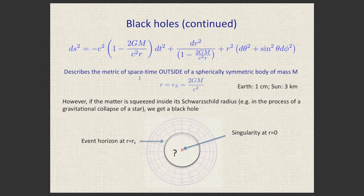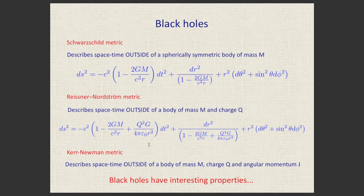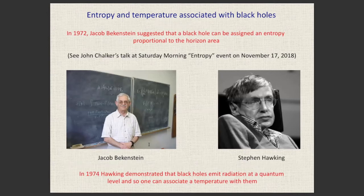Black holes come in several types: neutral Schwarzschild black holes, charged Reissner-Nordström black holes, rotating Kerr black holes, and rotating charged Kerr-Newman black holes. Their most interesting properties relate to their horizons. In the 1970s, Bekenstein, Hawking and others showed that black holes have entropy and temperature. Hawking showed they emit radiation at the quantum level. For a solar-mass black hole, the temperature is about 50 nanokelvin, while the entropy is gigantic.